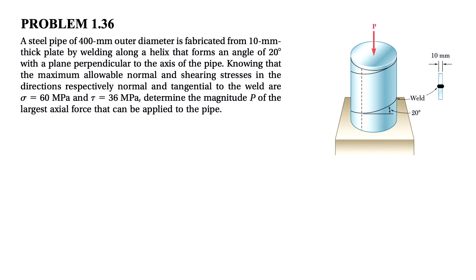We have a steel pipe of 400mm outer diameter that is fabricated from 10mm thick plate by welding along a helix that forms an angle of 20 degrees with a plane perpendicular to the axis of the pipe.